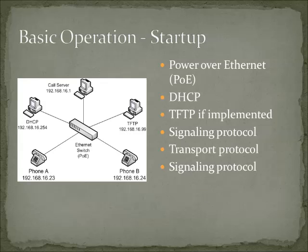Let's talk about some basic operation, which is true of most VoIP infrastructures. When you plug in a VoIP phone, the first thing that happens is a Power over Ethernet negotiation. The switch begins supplying power on pins 4, 5, 7, and 8. After the phone powers up, it goes through its boot process, loads its operating system, and then asks for an IP address. It's also very common for phones to check for the latest software by reaching out to the TFTP server to download configurations or BIOS updates.